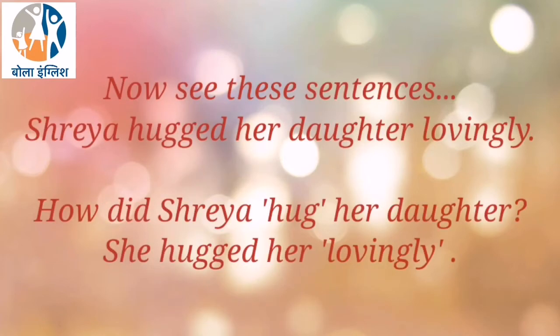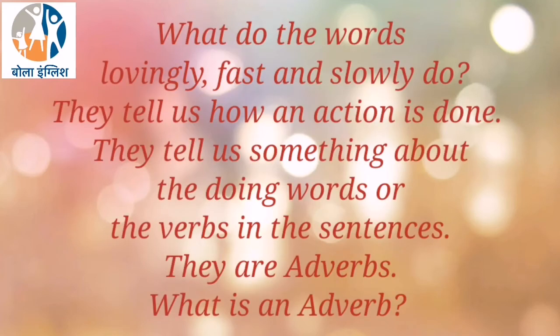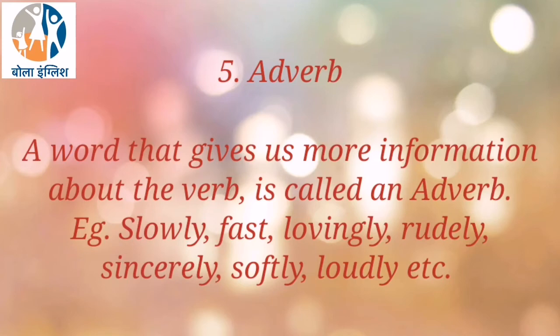Now see these sentences. 'Shreya hugged her daughter lovingly.' How did Shreya hug her daughter? She hugged her lovingly. 'A rabbit runs fast.' How does a rabbit run? He runs fast. 'A tortoise walks slowly.' How does a tortoise walk? It walks slowly. The words lovingly, fast, and slowly tell us how an action is done — they tell us something about the verbs in the sentences. They are adverbs. A word that gives us more information about the verb is called an adverb. For example: slowly, fast, lovingly, rudely, sincerely, softly, loudly, etc.